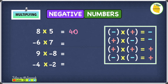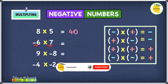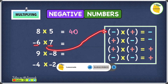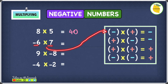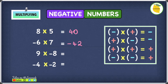Let's move on to the next one, which is minus 6 times 7. In this case, we have two different signs — a minus and a plus. In other words, we have a negative and a positive number multiplied together. In this case, you're going to get a negative answer. So minus 6 times 7 gives you an answer of minus 42.